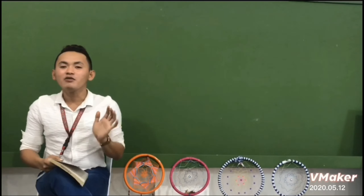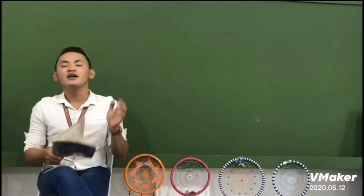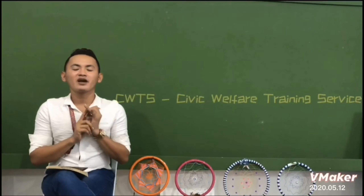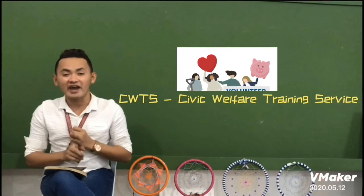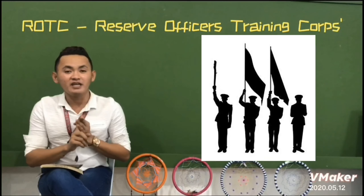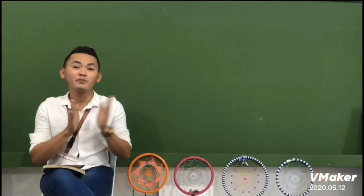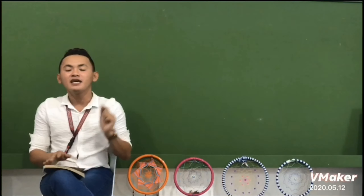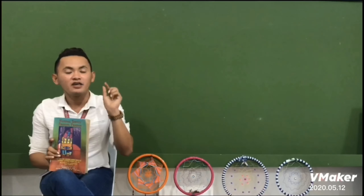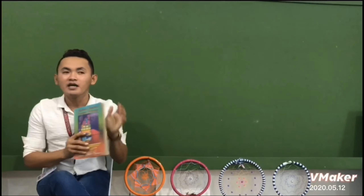What are the three components of NSTP under this Republic Act? We have LTS, which is the Literacy Training Service. We have CWTS, the Civic Welfare Training Service. And the last one is ROTC, the Reserve Officer Training Corps. The student has the freedom to choose whichever component they want. The student must take that component for a total of two semesters to cover the required six units and complete the course.